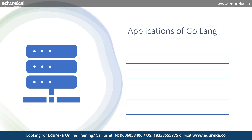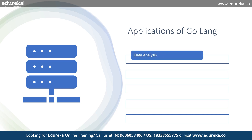Let's talk about the applications of Go Language. In terms of data analysis and science, the use of Go in data analysis and scientific computing is growing rapidly. Libraries like GoNum offer functionality for numerical computing, linear algebra, and machine learning. Because of its speed and concurrent features, Go is a good choice for handling big data sets and parallel processing.